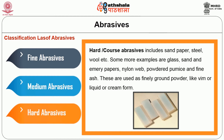More examples of abrasives are glass, sand and emery, hard paper, nylon whip, powder, pumice, and fine ash. These are used as finely ground powder — like VIM — or in liquid or cream form. Liquid abrasives are generally more expensive but more convenient to use, and should be stored properly. They can be either diluted in a little water or used directly with a dry cloth.